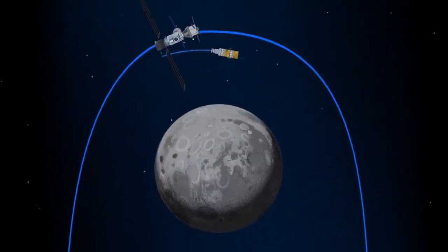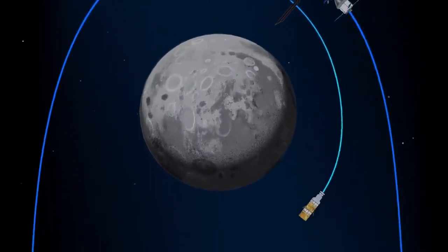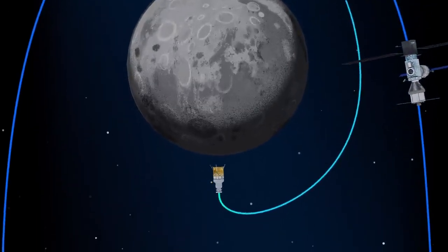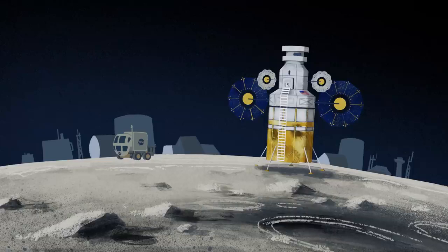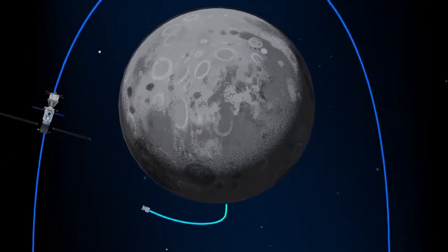The lunar lander system itself is built for three unique steps: descending from the halo orbit of Gateway down to a low lunar orbit, descending from low lunar orbit to the surface, and once the lunar mission is complete, launching from the surface of the Moon and ascending all the way back to the orbiting Gateway.